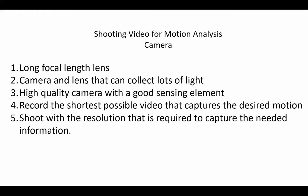For cameras that do not allow this control, they will automatically increase the shutter speed to prevent overexposure of your object. Three, a high quality camera will also have a high collection efficiency and will also help to prevent motion blur. Four, record the shortest possible video that captures the desired motion. Longer videos will be larger files and will take more time to process.